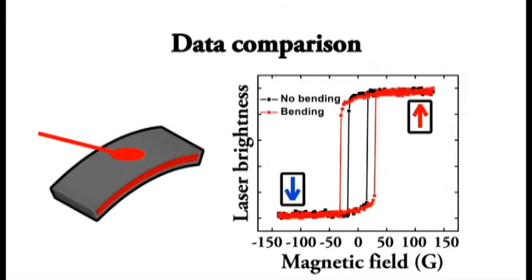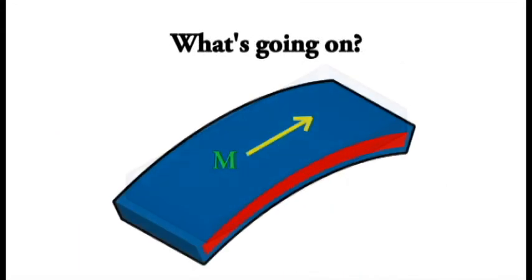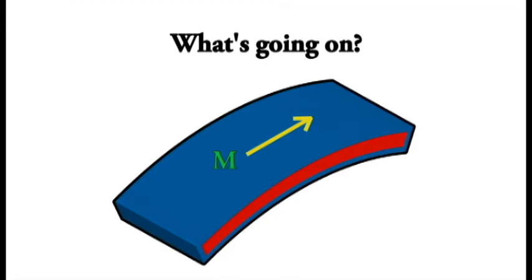Next, we bend our sample without breaking it and re-measure the laser signal. When we compare our data to the control experiment, we see a difference. By bending the magnet, we are making it easier for it to remain pointed along one direction. Even though this doesn't switch the magnet, it still experimentally confirms that bending the magnet changes its magnetic properties.